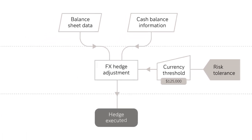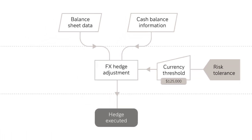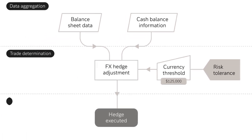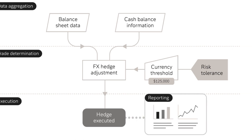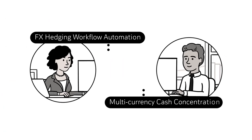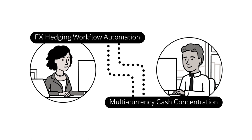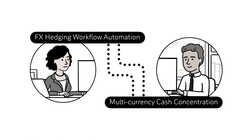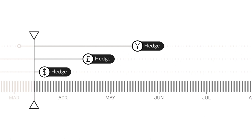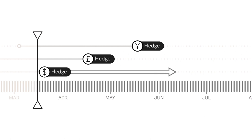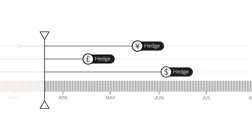The new process is fully automated, from data aggregation to trade determination, execution and reporting. It is also integrated with Thomas's existing workflow and transaction dates are aligned, so FX hedges are automatically rolled to ensure they no longer negatively impact cash balances.